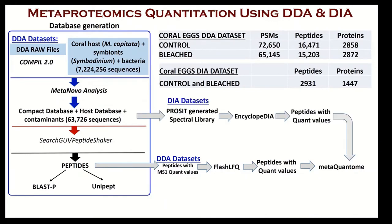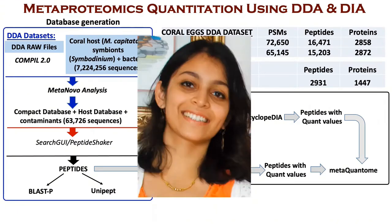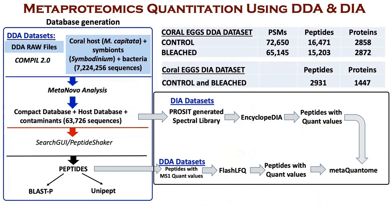For DIA data, PROSIT-generated spectral library along with FASTA file, the GPF data, and experimental data were used to detect peptides and their associated quantitation. As you can see here, DIA analysis detected fewer peptides and proteins as compared to the DDA data. The results from both DIA and DDA workflows were a list of identified peptides along with their quantitative values, and we decided to analyze the data with MetaQuantum to look at some statistically significant peptides present in the sample.